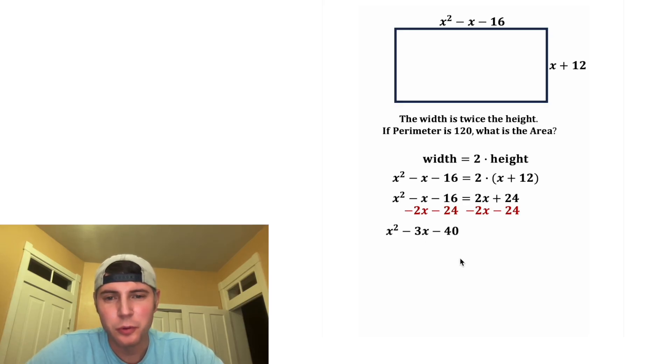We can factor this. We need two numbers that add to -3 and multiply to -40. That's going to be -8 and +5. Negative 8 plus 5 is -3, and -8 times 5 is -40, so we can plug those in here.